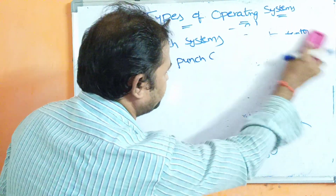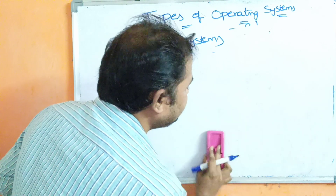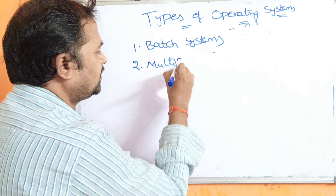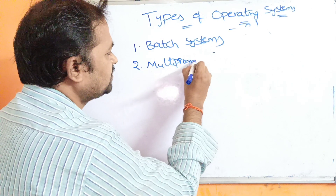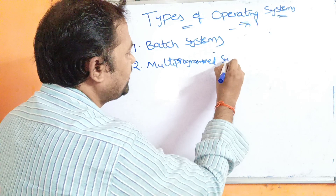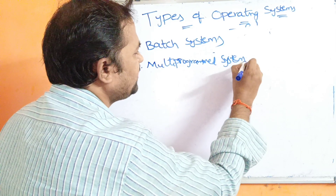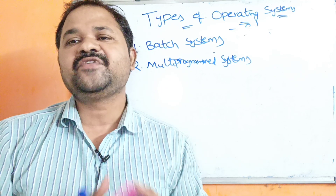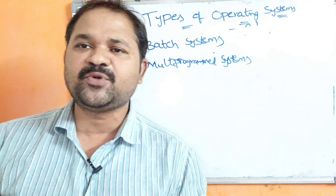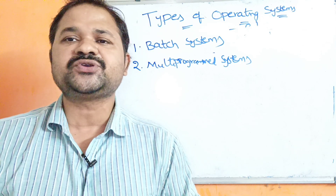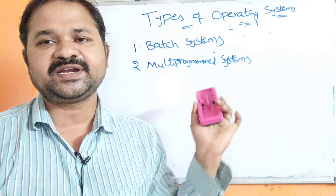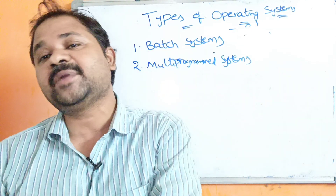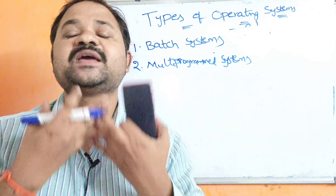The second type of system is the multiprogramming system. The name itself specifies the meaning. Multiprogramming means placing multiple programs in the main memory and executing all the programs simultaneously.